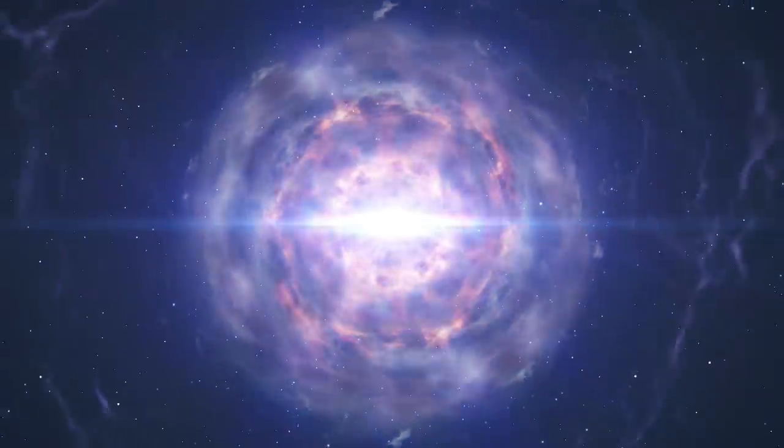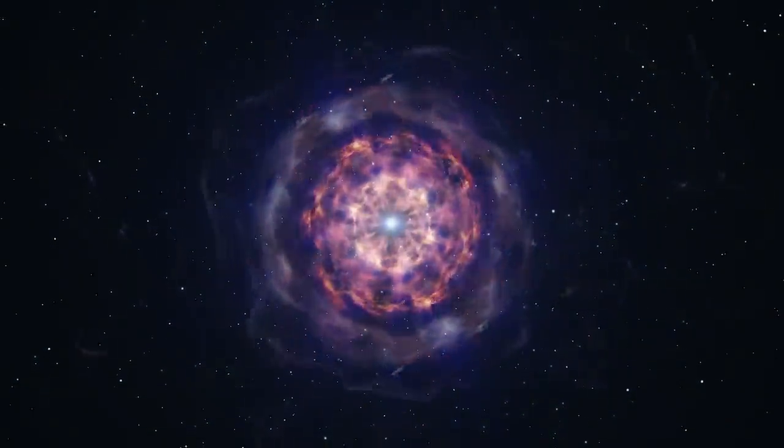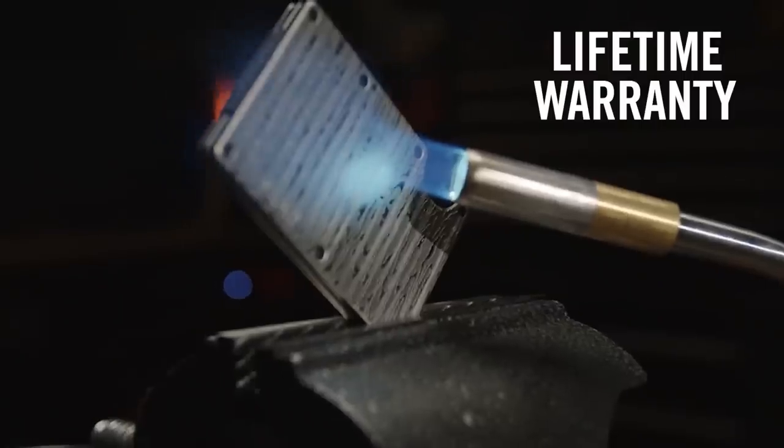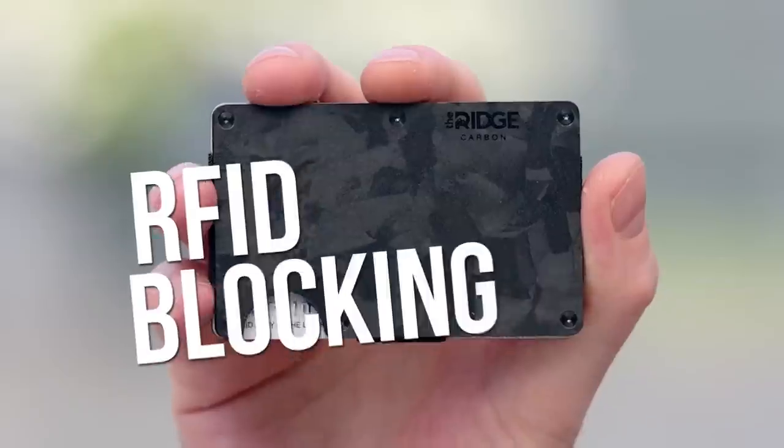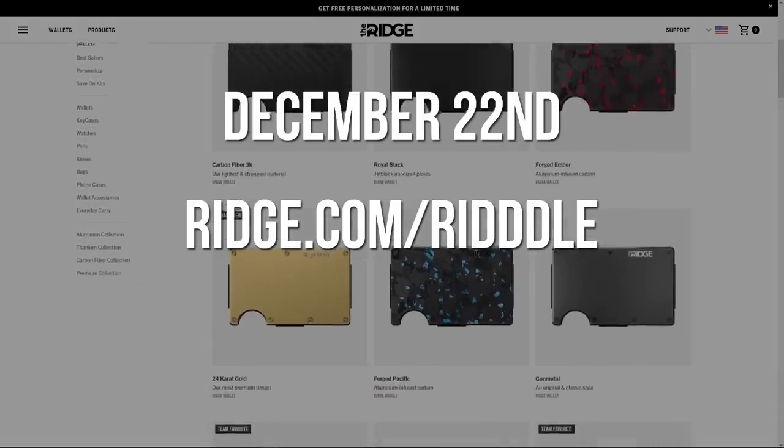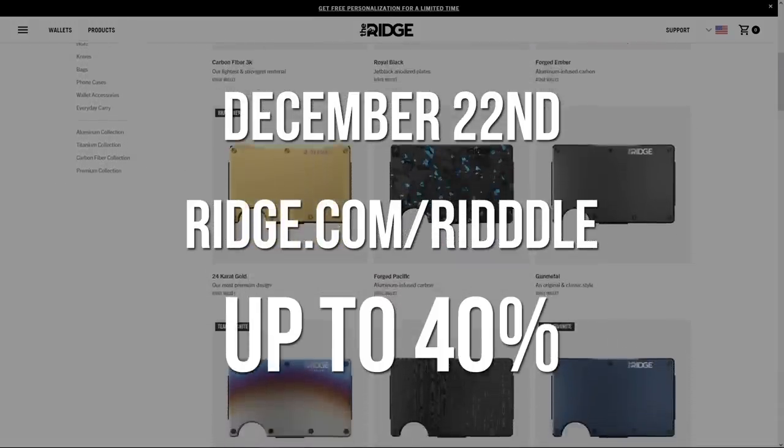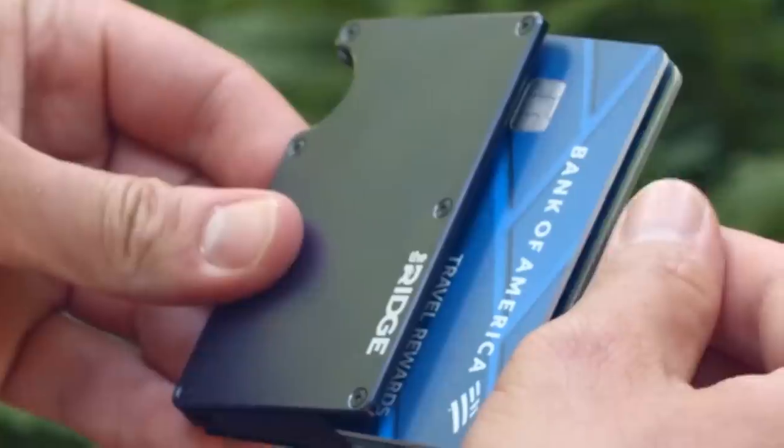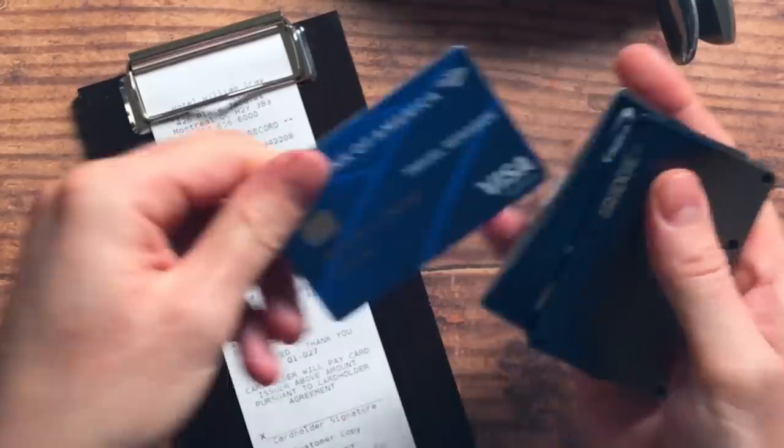But there is one thing that will survive even the destruction of the universe: the Ridge wallet, made of an extremely durable material and with built-in protection from digital pickpockets. Follow the link ridge.com/riddle. Through December the 22nd, save up to 40 percent. Click on ridge.com/riddle. Well, I'll be thinking about the next video about Jupiter.